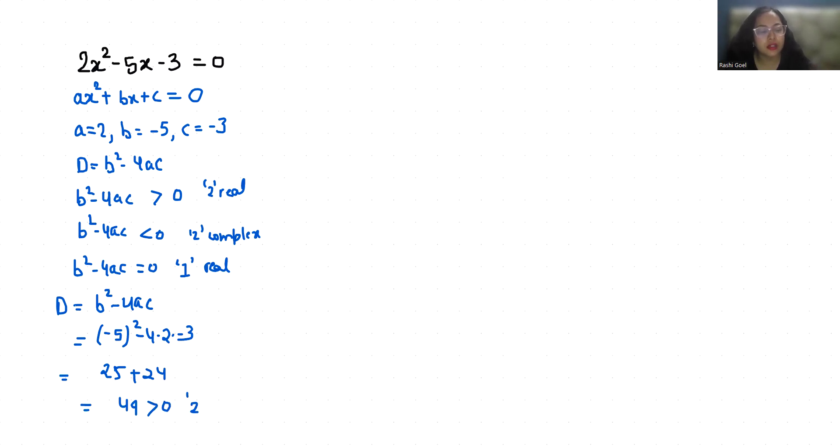So 2 real roots exist. Let's find out. I am going to use the quadratic formula: x = (-b ± √(b² - 4ac)) / 2a. So x = (5 ± √49) / 4.